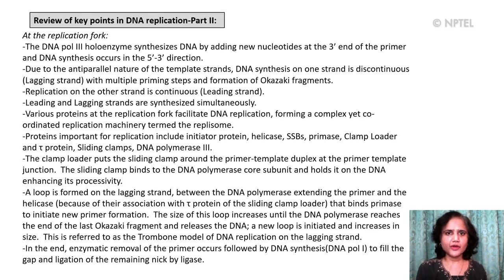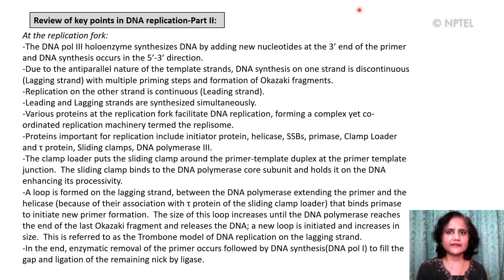At the replication fork, the DNA pol 3 holoenzyme synthesizes DNA by adding new nucleotides at the 3' end of the primer. Due to the anti-parallel nature of the template strands, DNA synthesis on one strand is discontinuous — this is referred to as a lagging strand — with multiple priming steps and formation of Okazaki fragments. Replication on the other strand is continuous and is referred to as the leading strand. Leading and lagging strands are synthesized simultaneously. The complex, co-ordinated replication machinery at the fork is termed the replisome.